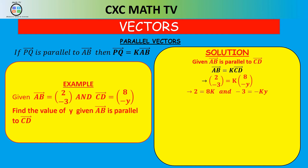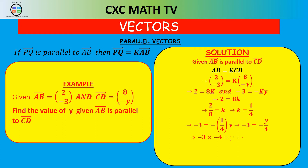From the X components, 2 = 8K, so dividing both sides by 8 gives K = 2/8 = 1/4. Substituting K = 1/4 into the Y equation: −3 = −(1/4)Y, which gives −3 = −Y/4. Cross multiplying: Y = −3 × −4 = 12. So Y is equal to 12.